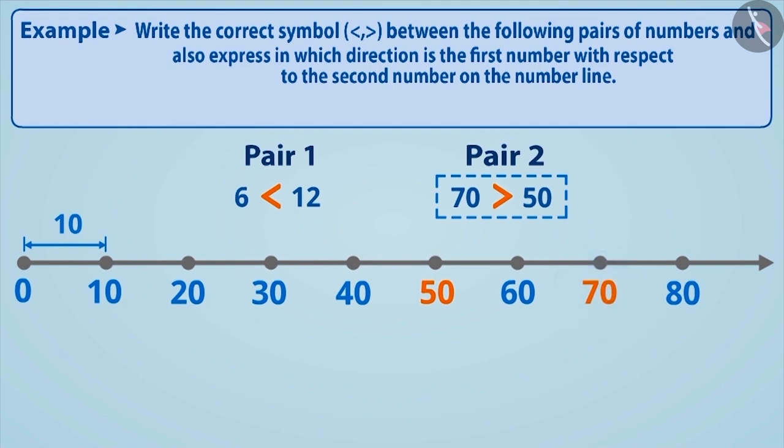Therefore, numbers 70 and 50 can now be expressed on the number line. We can say that the number 70 is located on the right side of 50 on the number line.